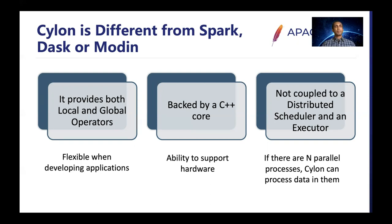Also, unlike Spark or Dask, its execution is not coupled to a distributed scheduler. If you have N parallel processes, you can do data processing between them using Cylon as a library. For example, in a deep learning training application you can use Cylon alongside it. We use Cylon along with PyTorch to train deep learning models in a distributed setting. Cylon does the data processing part while PyTorch does the deep learning training part. You cannot do that with other frameworks because they need their own schedulers that come with process management.